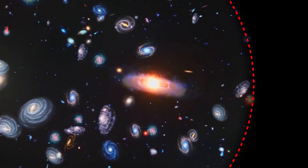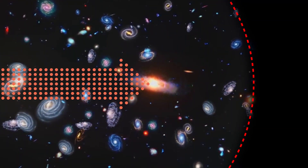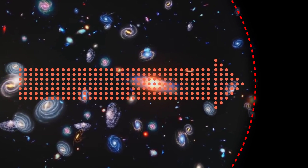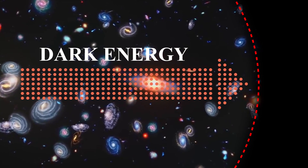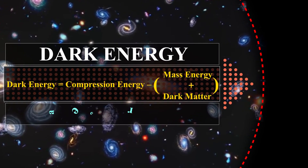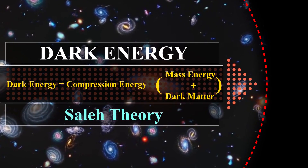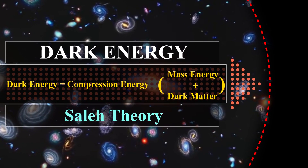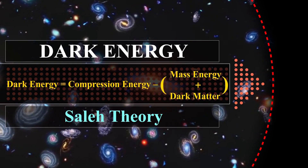Salih theory believes the difference between compression energy and mass energy is dark energy, which accelerates the masses after creation. So dark energy is actually an initial mistake in the calculation of the energy of the Big Bang.